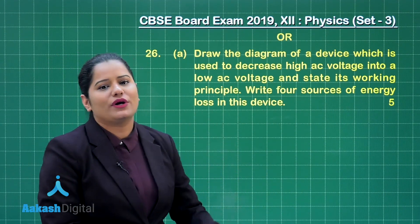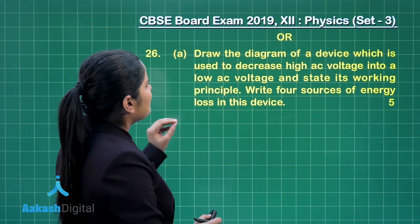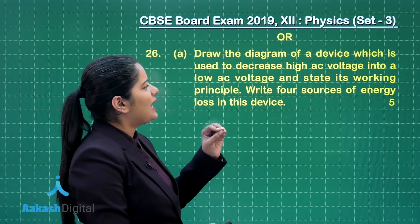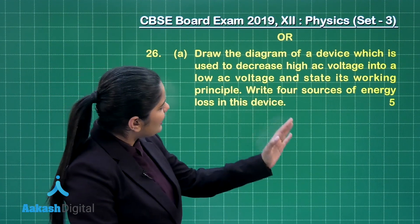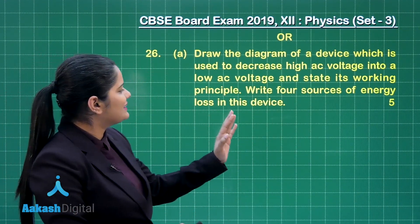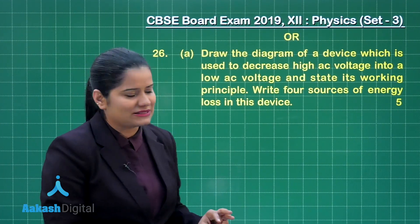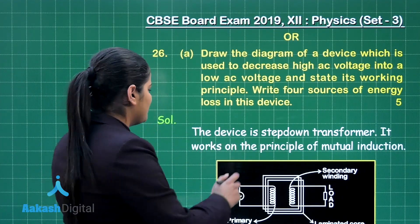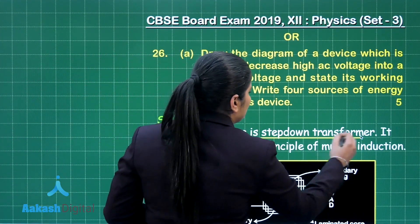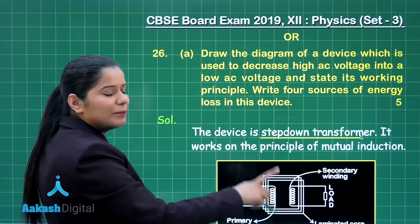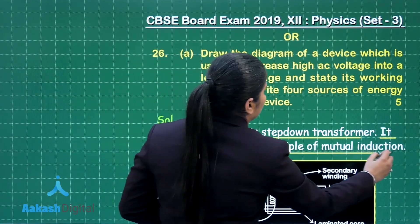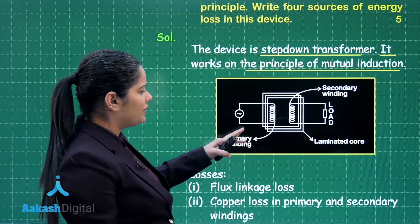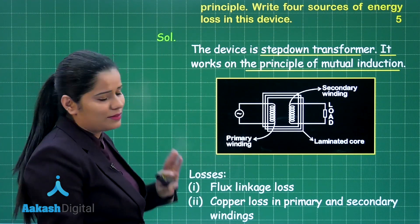The first part of the second choice of question 26 asks: draw the diagram of a device used to decrease a high AC voltage to a low AC voltage and state its working principle. We also need to write four sources of energy loss in this device, and this part is for 3 marks. This device is a step-down transformer. It works on the principle of mutual induction, and you need to draw a labelled diagram of the step-down transformer.